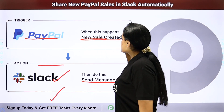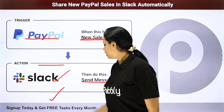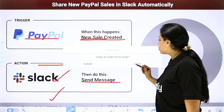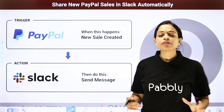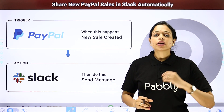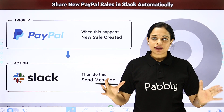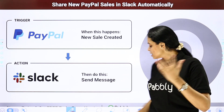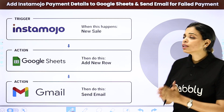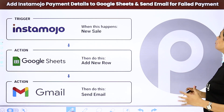Then we have sharing new People sales in Slack automatically. The moment a sale is created through People, the team is notified on Slack. This saves a lot of time compared to emailing them or messaging on WhatsApp, and everybody stays on the same page — nobody has forgotten anything.